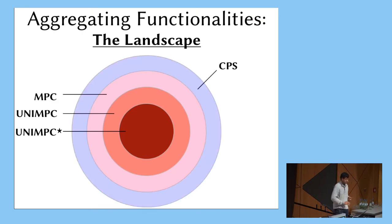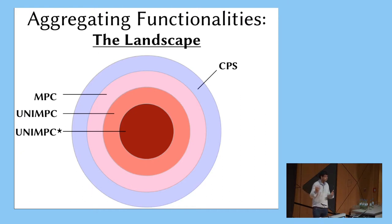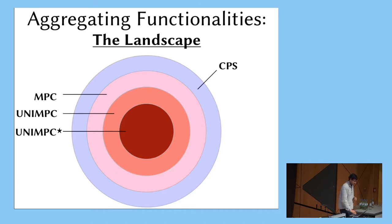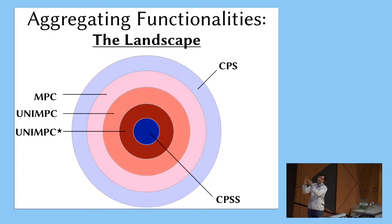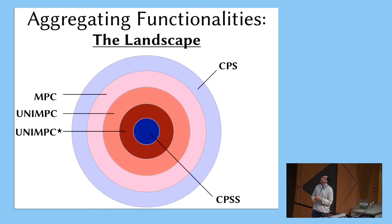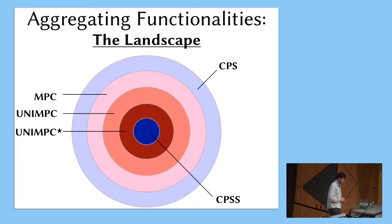What we can tell you is the following. There is a class defined in a combinatorial or algebraic way called CPS, and all functionalities with MPC protocols live inside this class. On the other hand, we can sandwich all these classes within another class — CPSS — which is also defined combinatorially or algebraically. We show that the class of CPSS functionalities do actually have UNIMPC* protocols. So the gap is between these two things, with an extra S that's the confounding difference.